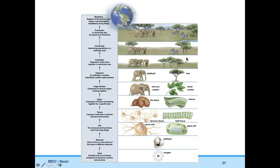Let's go from top to bottom. The biosphere is all the regions of Earth's crust, waters, and atmosphere inhabited by living things. An ecosystem is a community plus its physical environment. Biospheres have ecosystems; ecosystems consist of communities; communities consist of populations; populations consist of organisms; organisms consist of organ systems; organ systems consist of organs; organs consist of tissues; tissues consist of cells; cells are made up of organelles, which are made up of molecules; molecules are made of atoms. Make sure you can memorize this and think of examples for each level of organization.